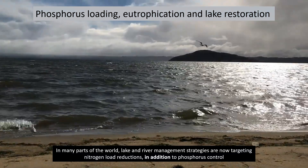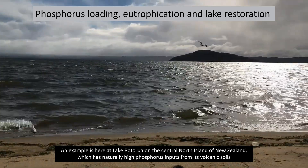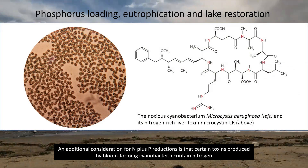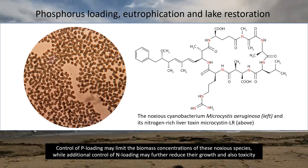In many parts of the world, lake and river management strategies are now targeting nitrogen load reductions in addition to phosphorus control. An example is Lake Rotorua on the central North Island of New Zealand, which has naturally high phosphorus inputs from its volcanic soils. Control of N pollution may also reduce the extent of oxygen depletion by ammonium-oxidizing bacteria (nitrifiers), as well as lessen the transport of nitrogen to the coastal ocean, where marine algal blooms can be stimulated by nitrogen enrichment. An additional consideration for N plus P reductions is that certain toxins produced by bloom-forming cyanobacteria contain nitrogen. Control of P-loading may limit the biomass concentrations of these noxious species, while additional control of N-loading may further reduce their growth and toxicity.